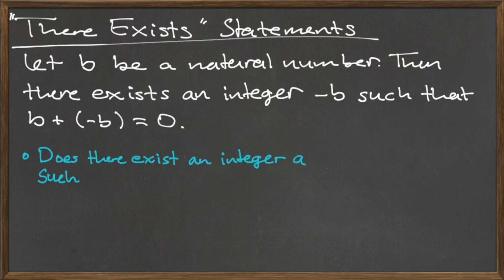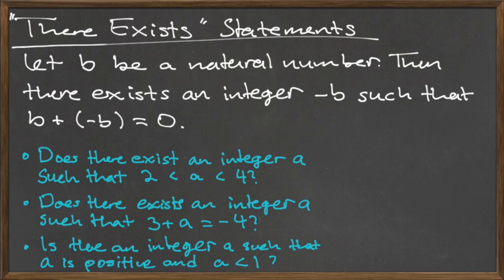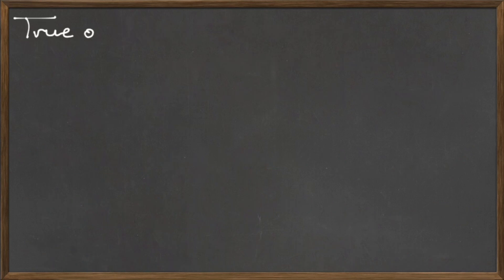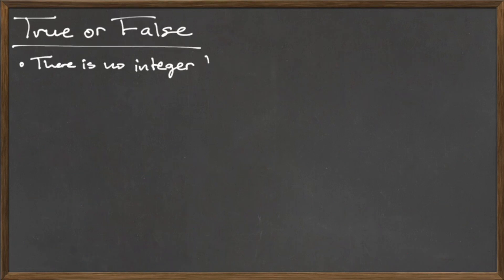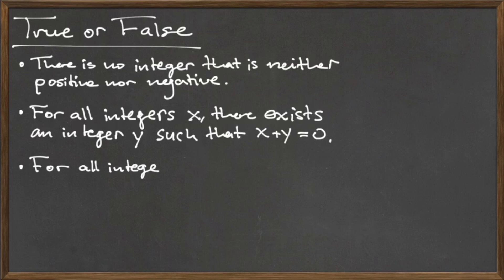Try determining if the following there exists statements are true or false, and give a number or numbers that justify your answer. Here are our solutions to these three there exists statements — were your answers the same as ours? To get some more practice with for all and there exists statements, try determining if the following statements are true or false and try to come up with a number or numbers that justify your answer.